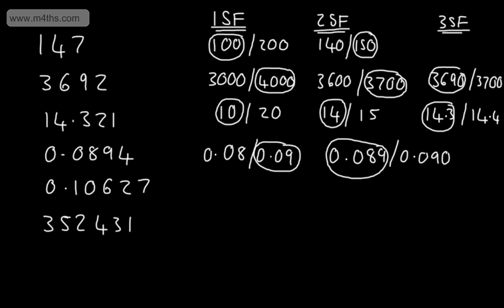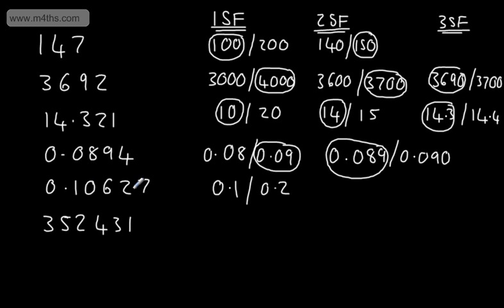If we now look at 0.10627 and round this to one significant figure, the first significant figure is in the tenths or 0.1 column. So I can have a choice of 0.1 or 0.2. We can see the number here — 0 — is going to be less than five, so to one significant figure we're going to have 0.1.